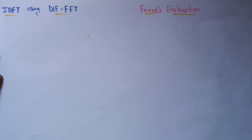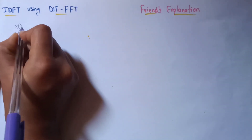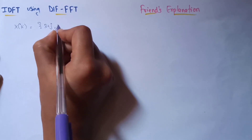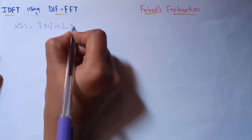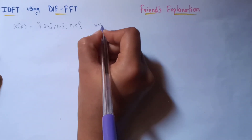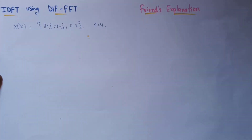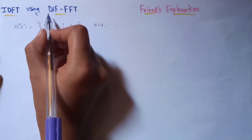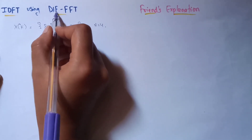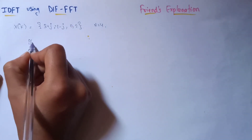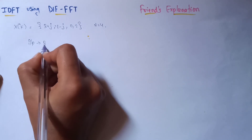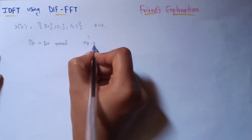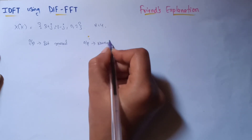I will take the output that we got from the DFT in the previous video. The sequence of the output in the frequency domain was: 3 plus j, minus 1 minus j, 0, and 2. The length of the sequence is 4. Now, as it is decimation in frequency, the input that is in the frequency domain will be in bit reversal order, and the output in the time domain will be in normal order.